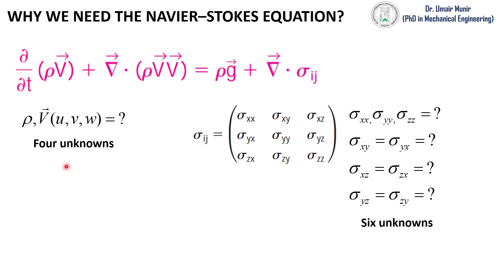So there are total 10 unknowns in this momentum equation, and we have only four equations: one is the mass equation, and three momentum equations to solve the fluid flow problems. We cannot find 10 unknowns from four equations, so we need the Navier-Stokes equations, in which we will convert this stress tensor into the velocity field.